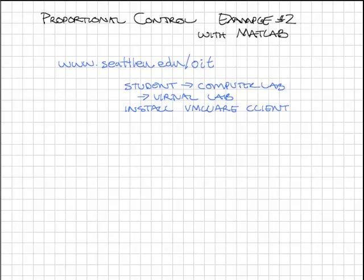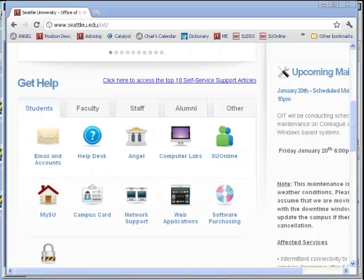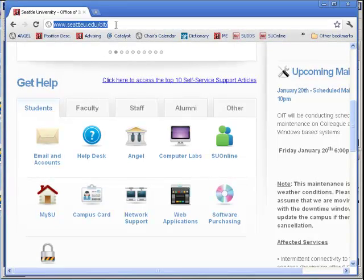If you don't have access to MATLAB on your machine, you can install it via the OIT's website. Here's the instructions. You can run MATLAB through the university's VMware. To install the VMware software on your computer, open a browser and go to Seattle U's OIT site.